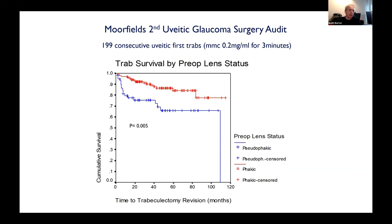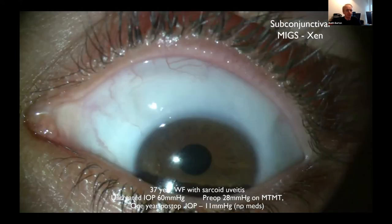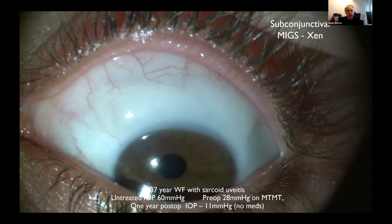Pseudophakia does something to your eye. It didn't matter which way around — those who were phakic first did better in the long term. By six years after a trab, 85% of my uveitic patients are pseudophakic, which is way, way higher than — for comparison, in the CIGTS study the rate of cataract surgery was about 10% at two or three years, which was thought to be very high. In uveitis it's up to 85%.